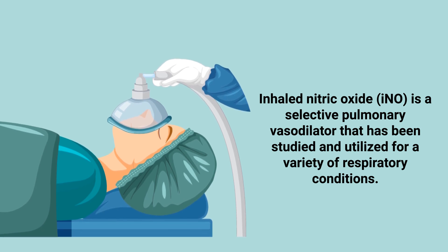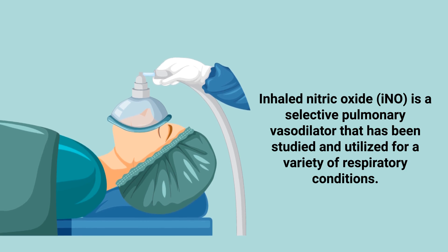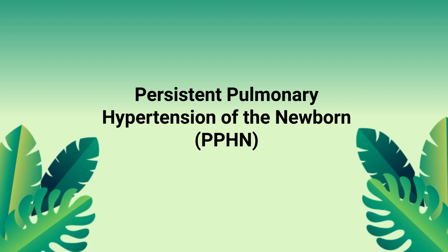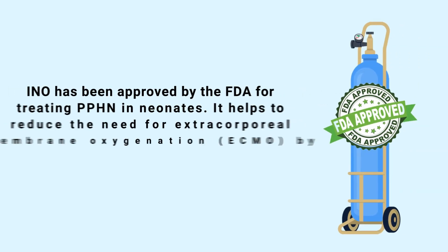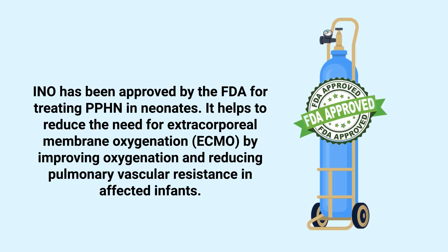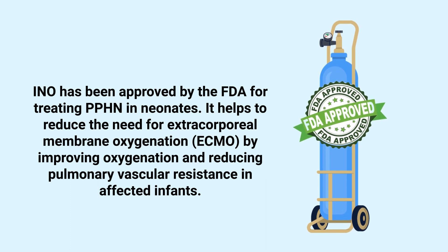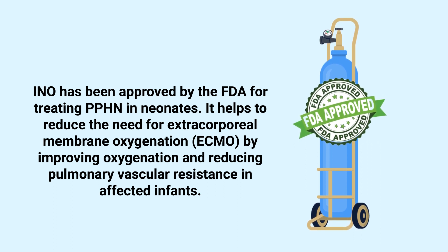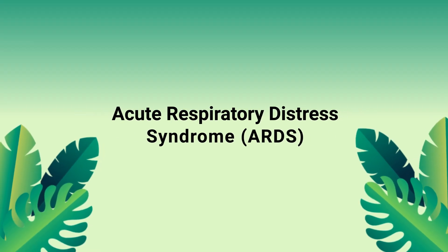Inhaled nitric oxide, or iNO, is a selective pulmonary vasodilator that has been studied and utilized for a variety of respiratory conditions. The first is PPHN, or persistent pulmonary hypertension of the newborn. Inhaled nitric oxide has been approved by the FDA for treating PPHN in neonates. It helps to reduce the need for extracorporeal membrane oxygenation, or ECMO, by improving oxygenation and reducing pulmonary vascular resistance in affected infants.